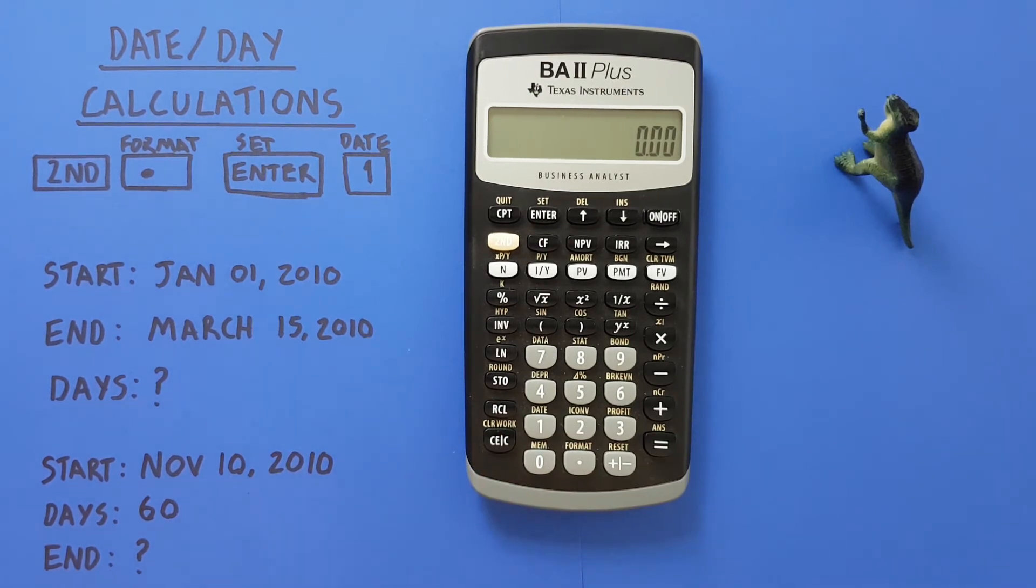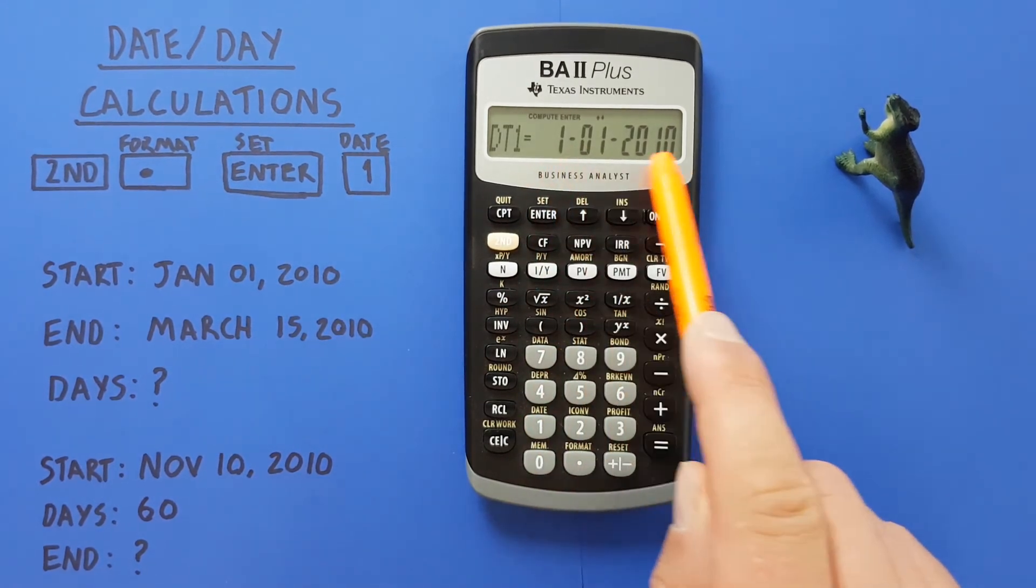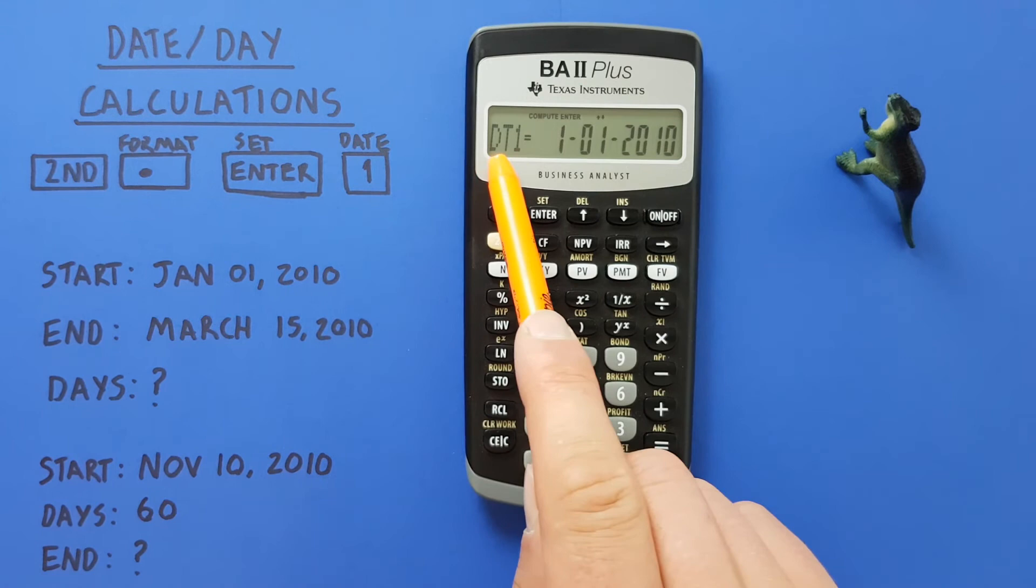All right, let's look at another example. Let's say we were given a project on November 10th, 2010 and had 60 days to complete it. We want to know when is the due date on that project.